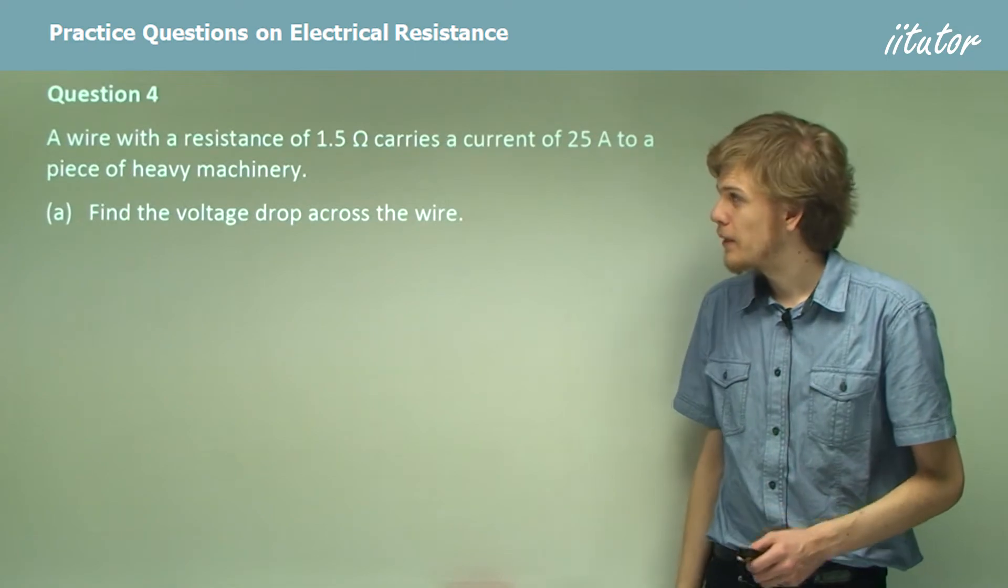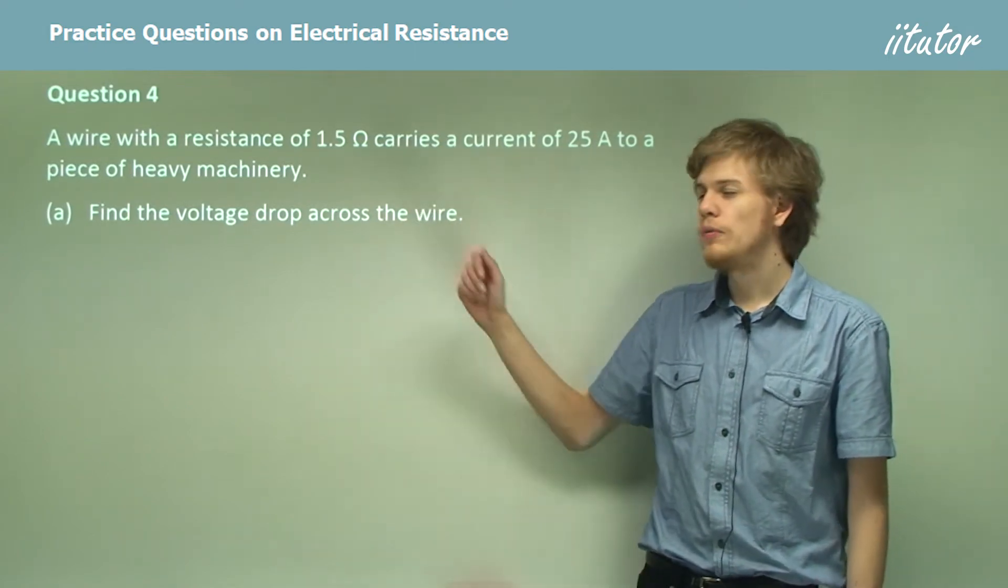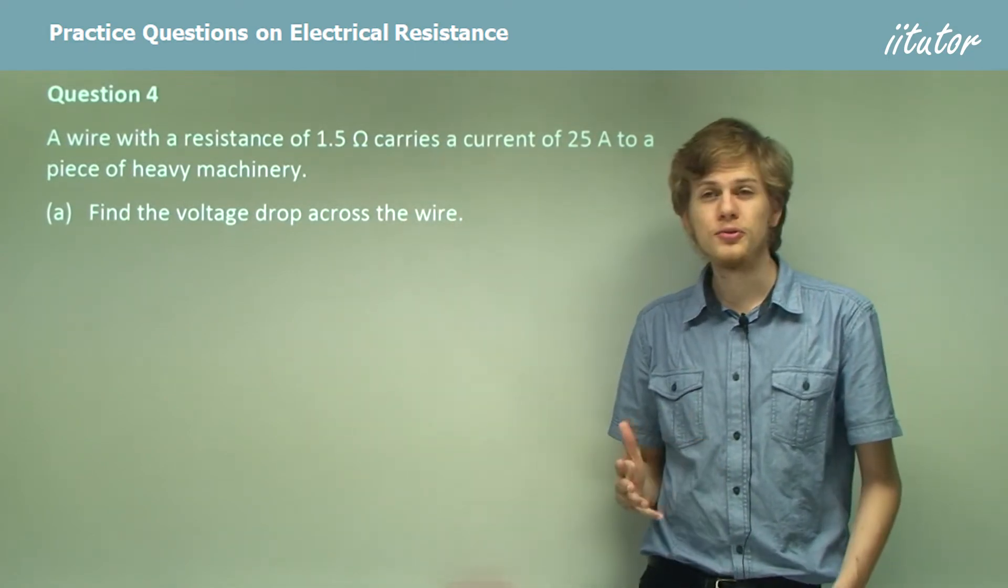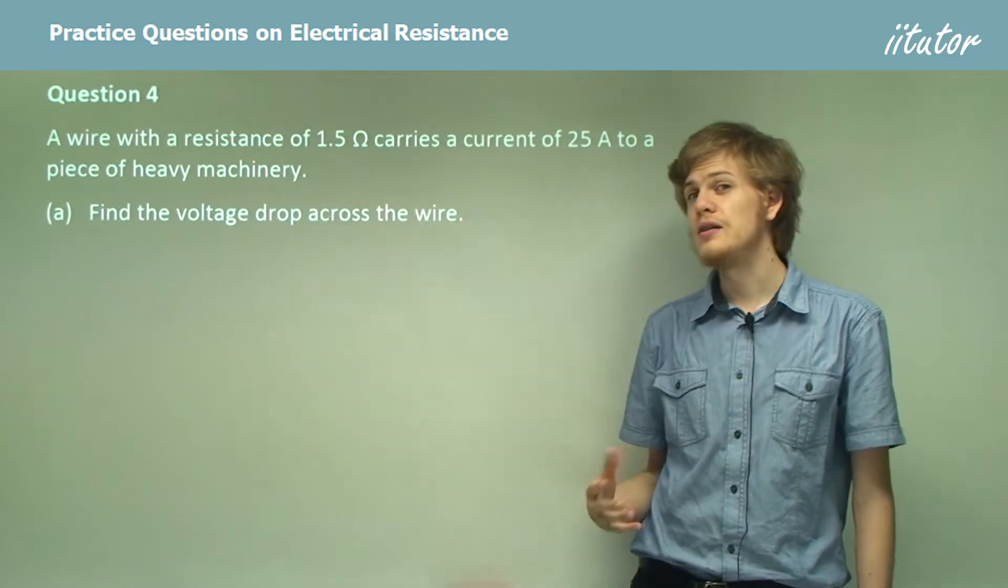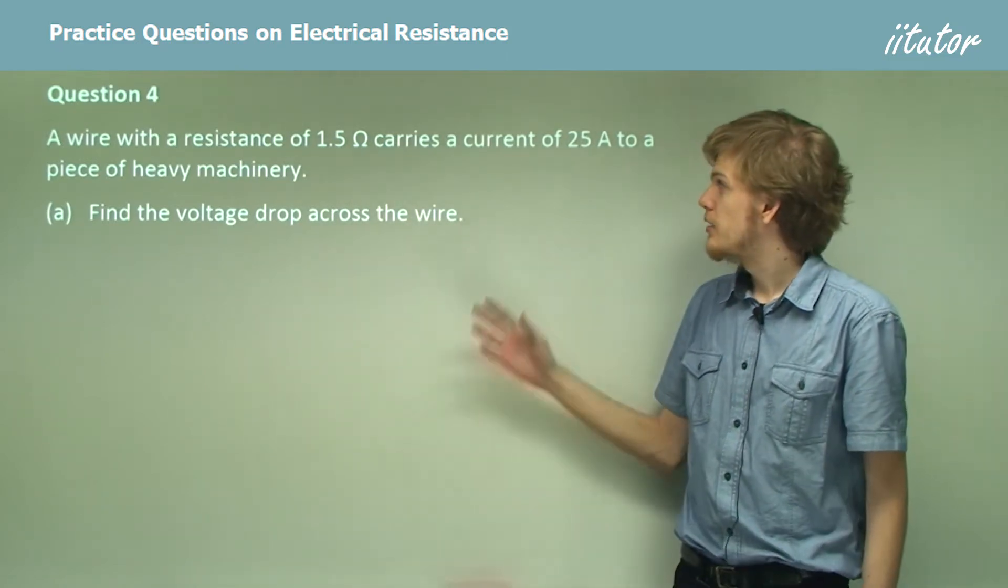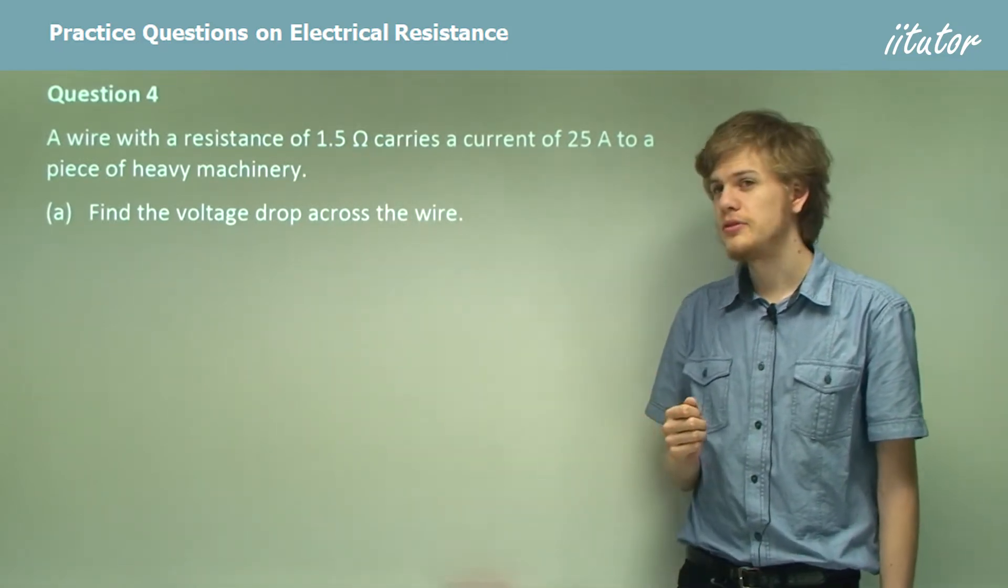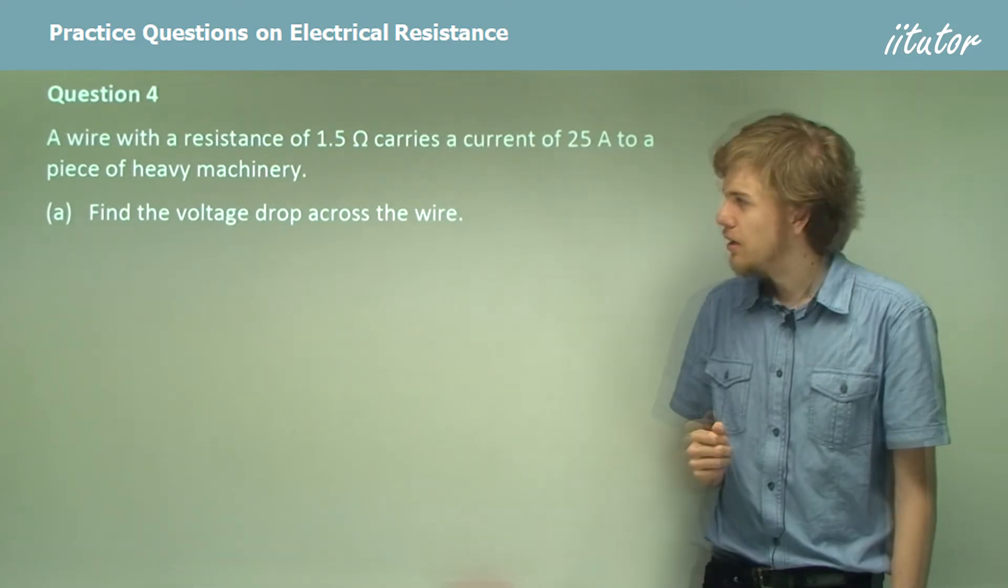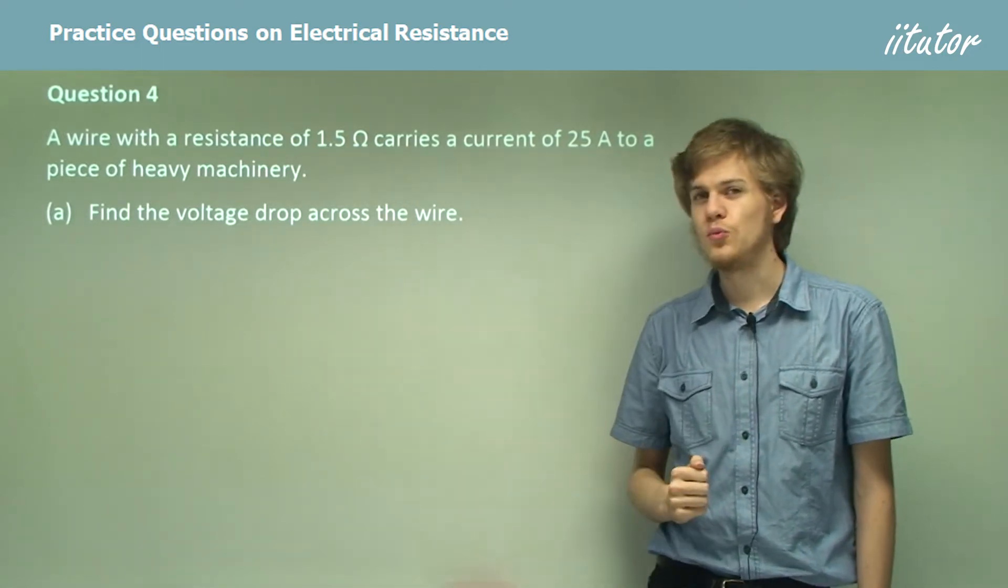Question 4. A wire with a resistance of 1.5 ohms, it's a low resistance, but then again, wires tend to have low resistances, carries a current of 25 amps to a piece of heavy machinery. Find the voltage drop across the wire.